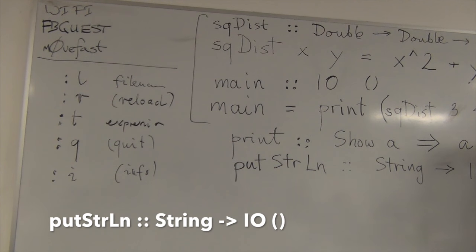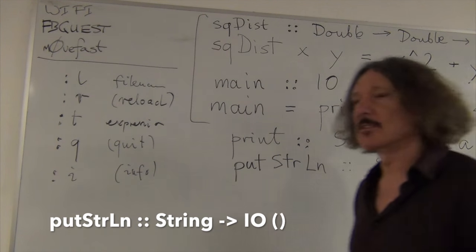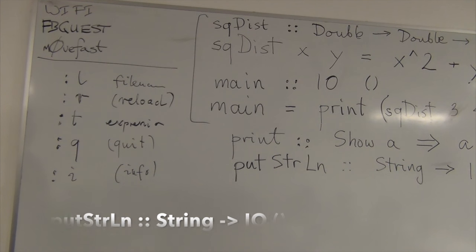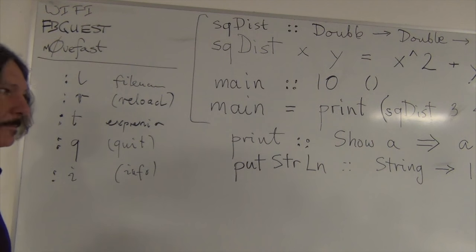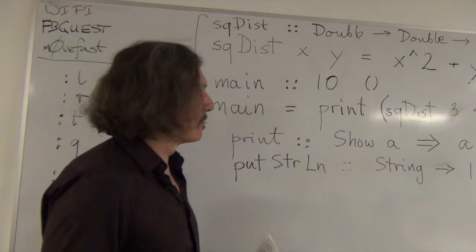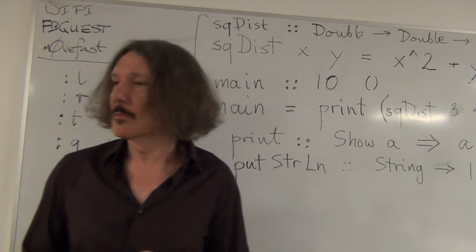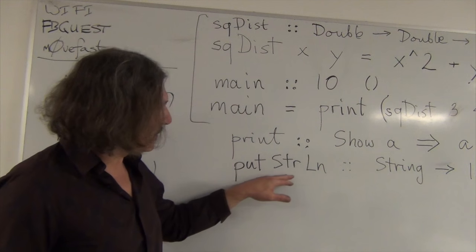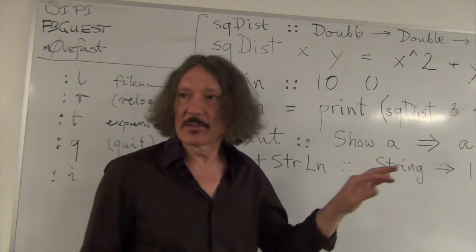So putster line also produces IO unit, but it doesn't take showable, it takes string. So this, if you want to write hello world, you would probably use putster line. Yeah? But, but, but, but, um, showable, show just says that there's a function show defined which produces a string. Mm-hmm. So, uh, putster line should operate, oh wait, we would operate on any type that supports show. No, putster line operates on strings. As opposed to... Yeah. Yeah. So, so, so you could,